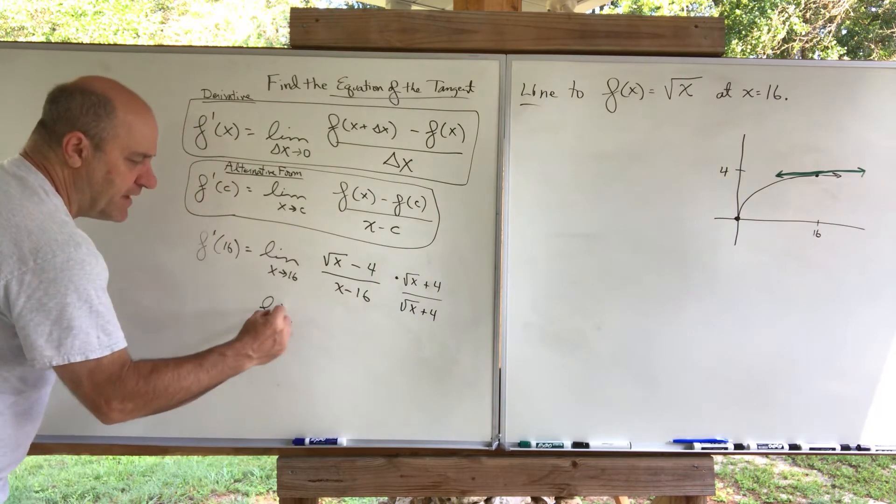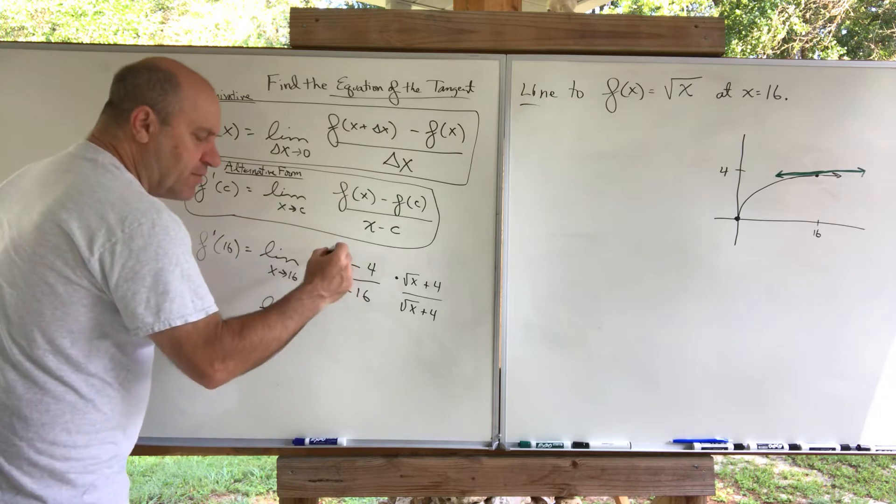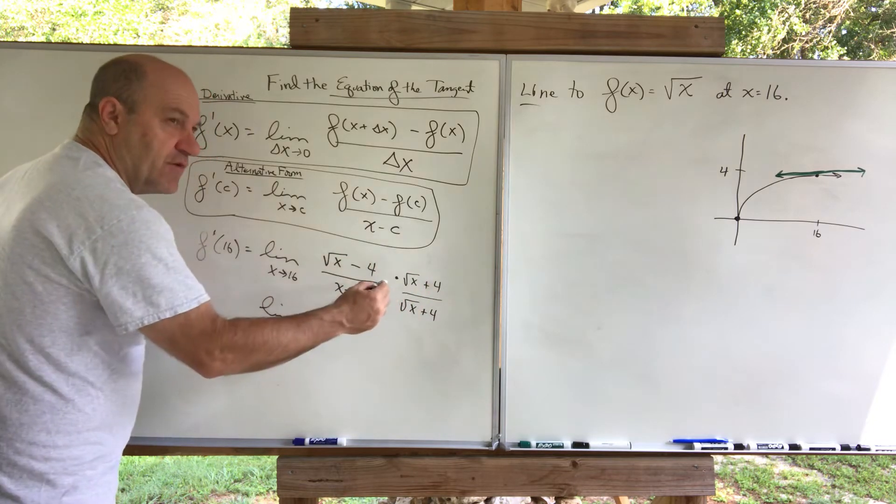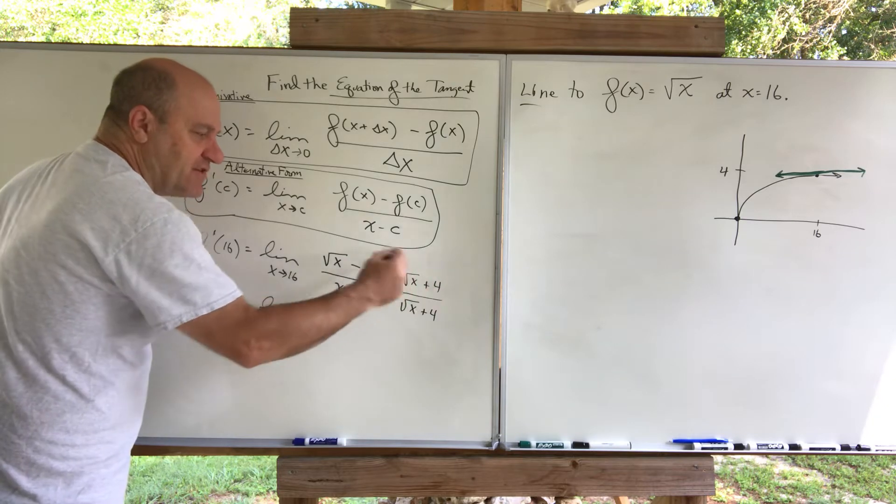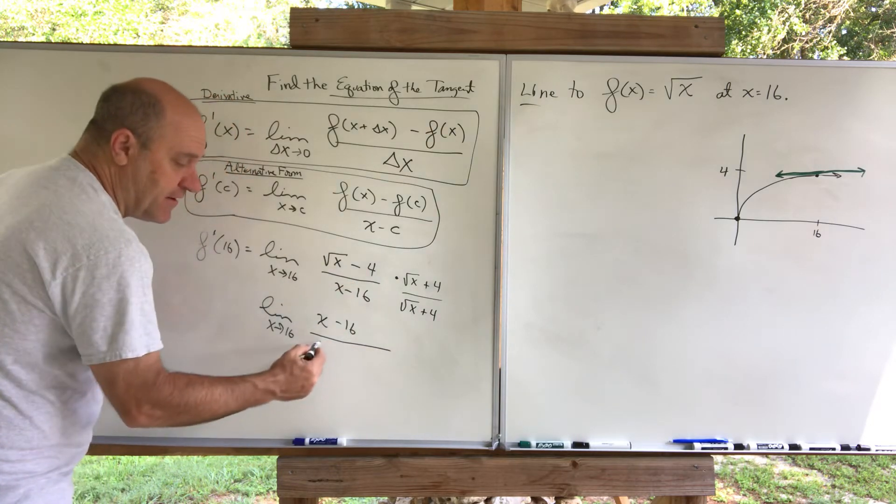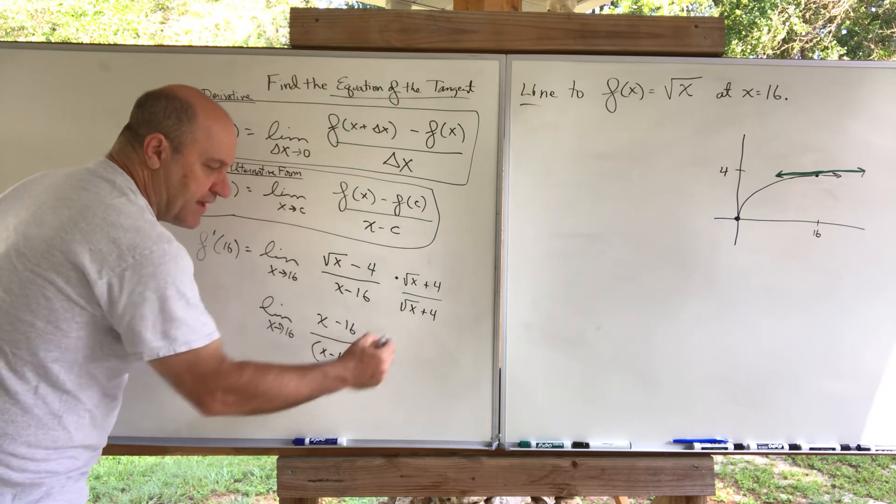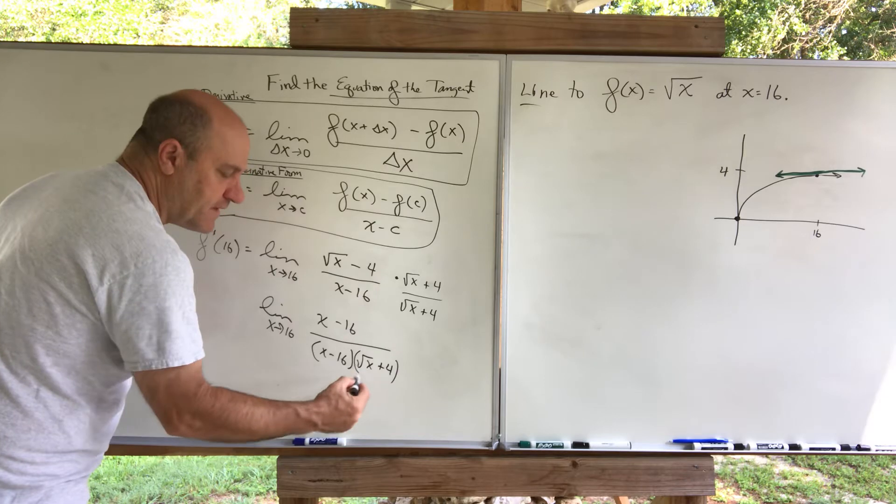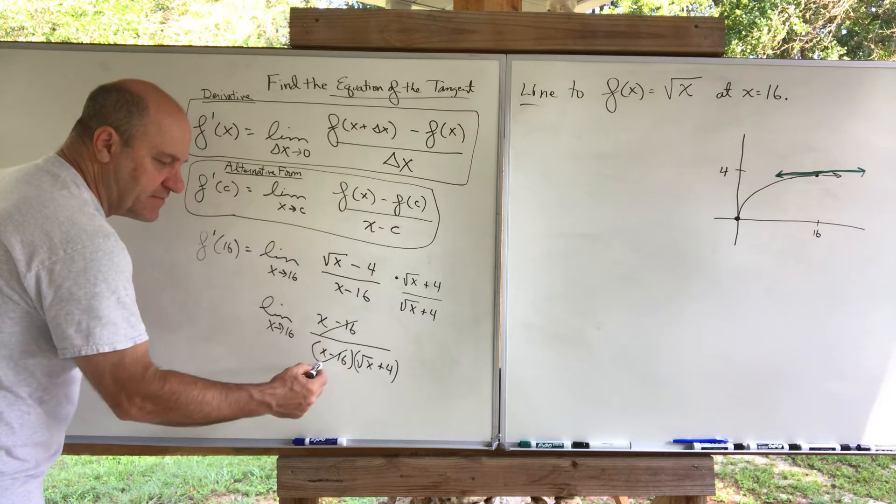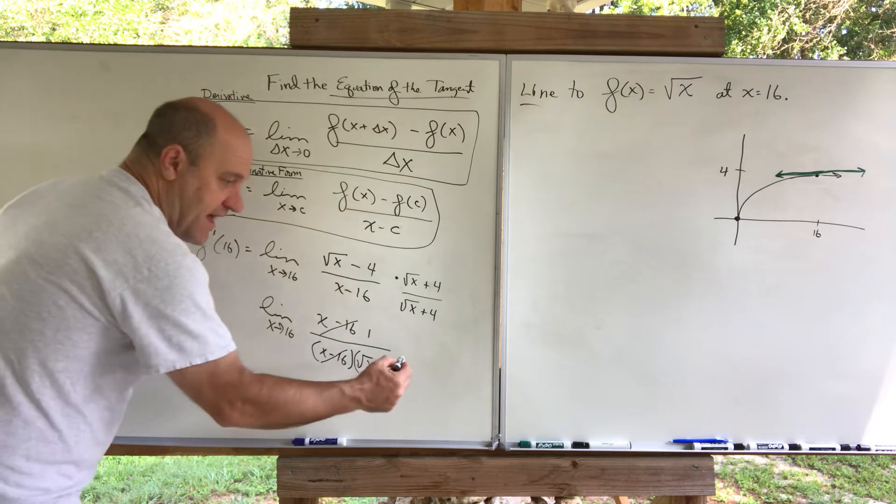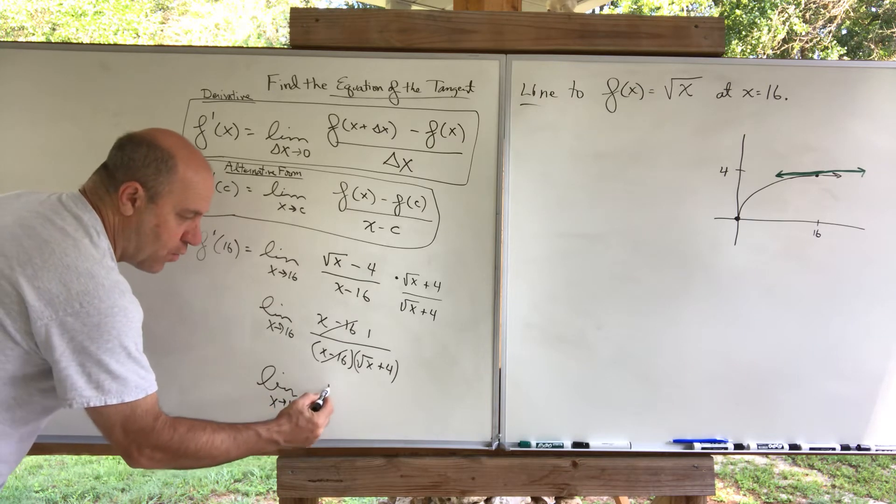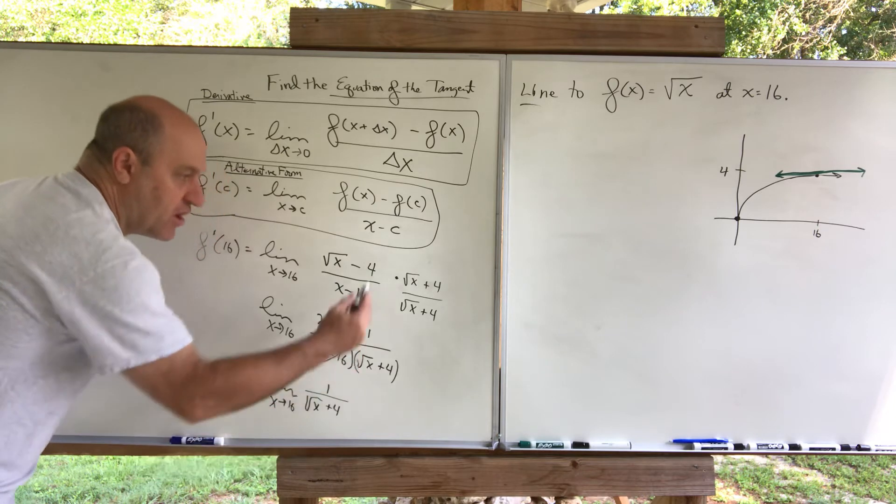Here we go. I'll do the limit as x goes to 16. In the numerator, when you multiply the square root of x times the square root of x, of course, you get x. When you multiply the outers and the inners, when you foil that out, the middle terms all cancel. Then, when you do the last terms, you get a negative 16. So when you foil out the numerator, you get x minus 16. In the denominator, we have this x minus 16, and we have it multiplied by this square root of x plus 4. I'm not going to foil that out, because I see what's happening. That quantity x minus 16 cancels with that quantity x minus 16, leaving me a 1 up here.